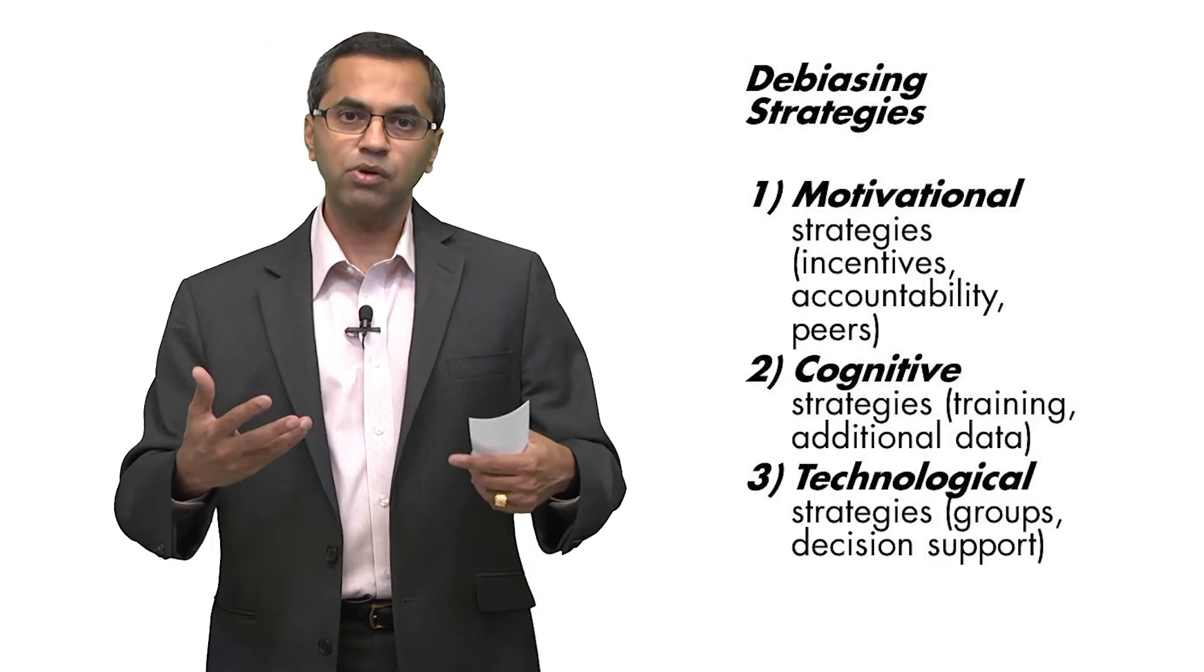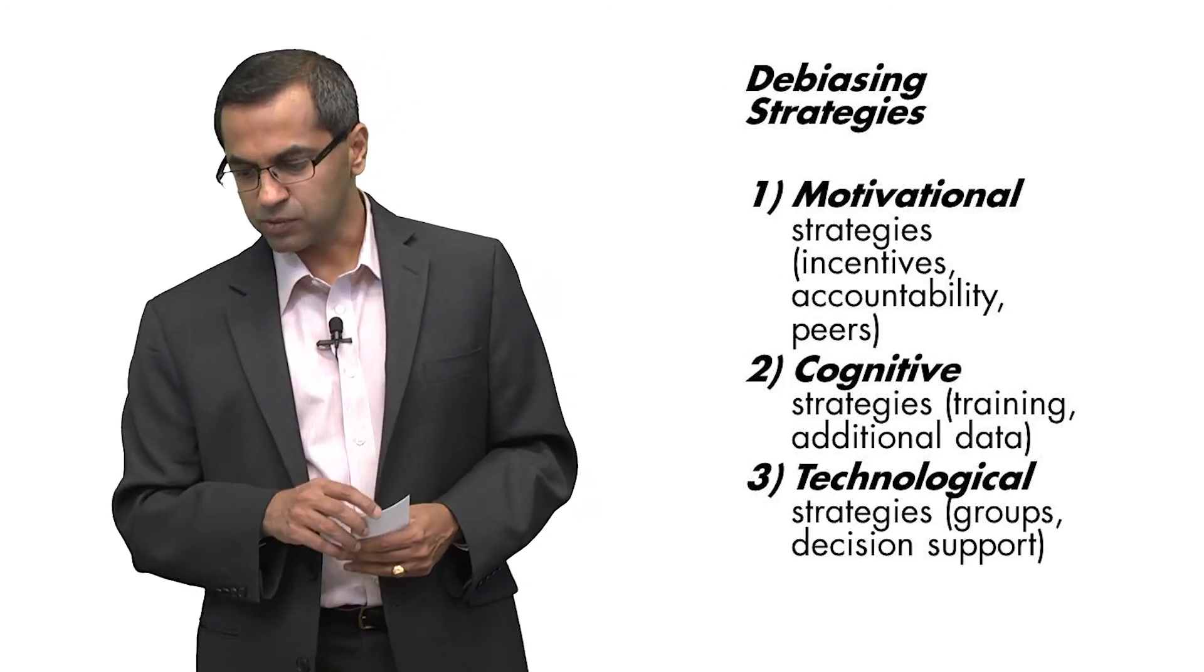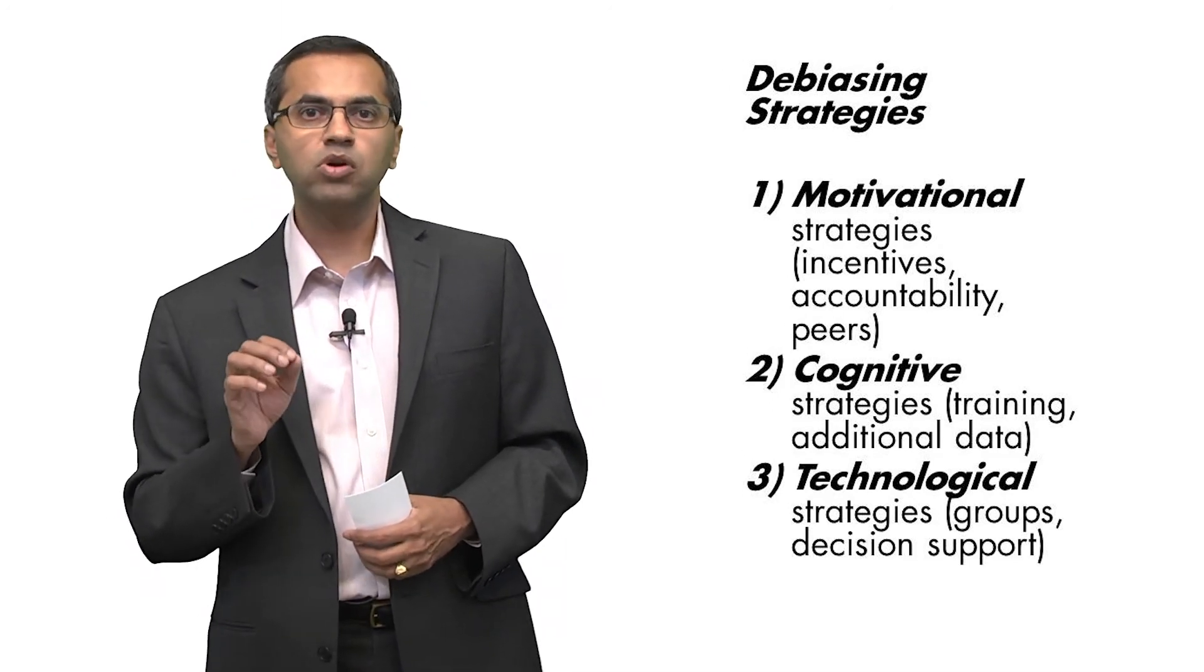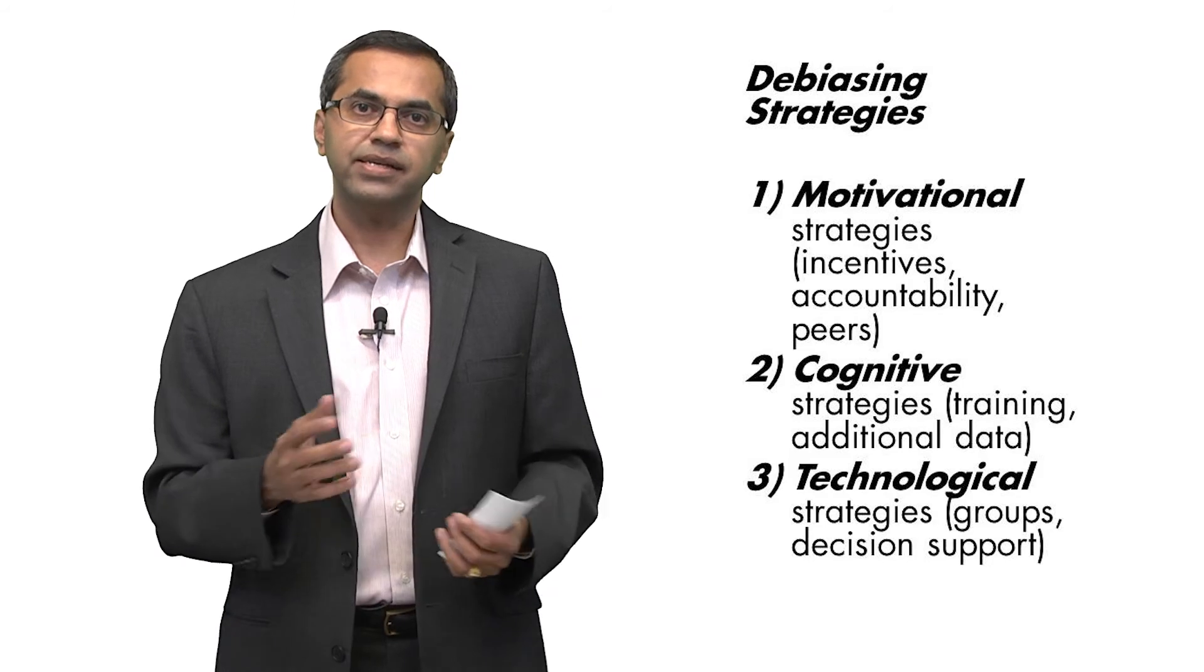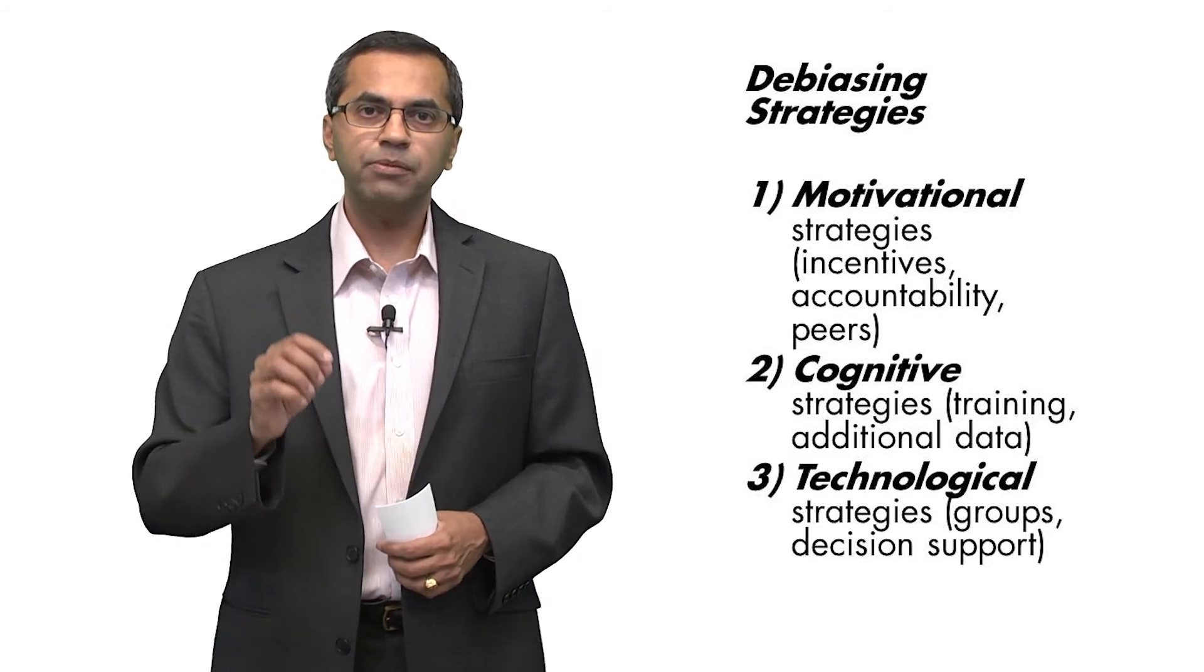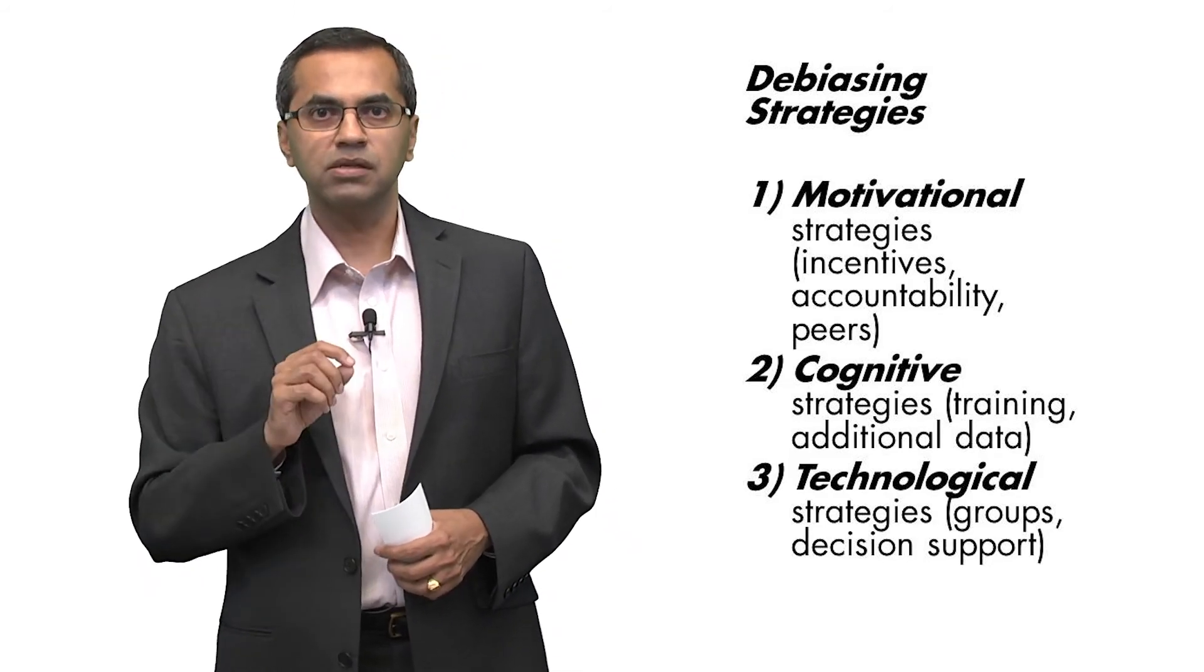But before we do that, let's spend a few minutes talking about the different kinds of de-biasing strategies. There are three kinds, and we'll actually get into a lot of detail in these kinds in the next week. The first one is a motivational strategy. The idea is simple. If you motivate people to come up with the right answer, they will.